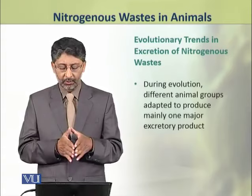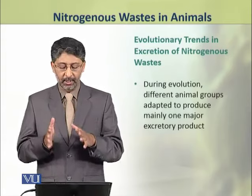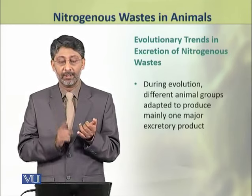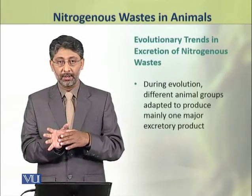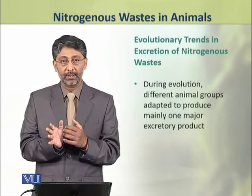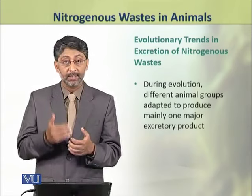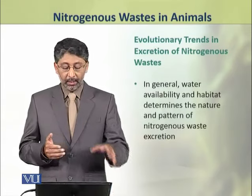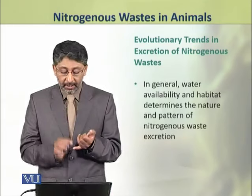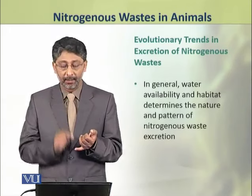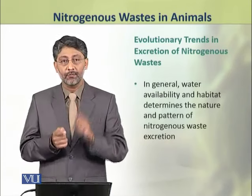Dear students, during evolution, different animal groups have adapted to produce mainly one major excreted product. Some animals excrete ammonia as the major nitrogen waste, some animals excrete urea, and some animals excrete uric acid. In general, we can say that water availability and the habitat of the animal determines the nature and pattern of nitrogenous waste excretion.